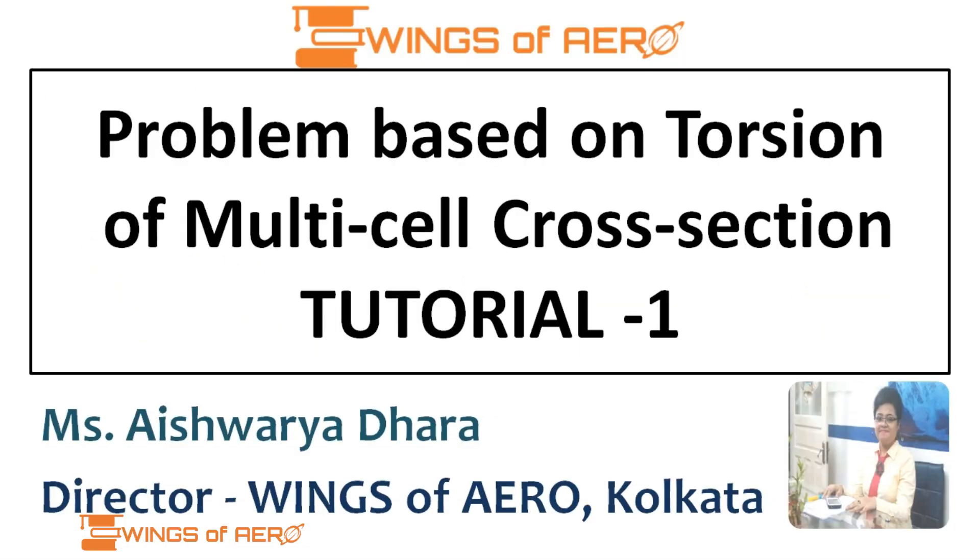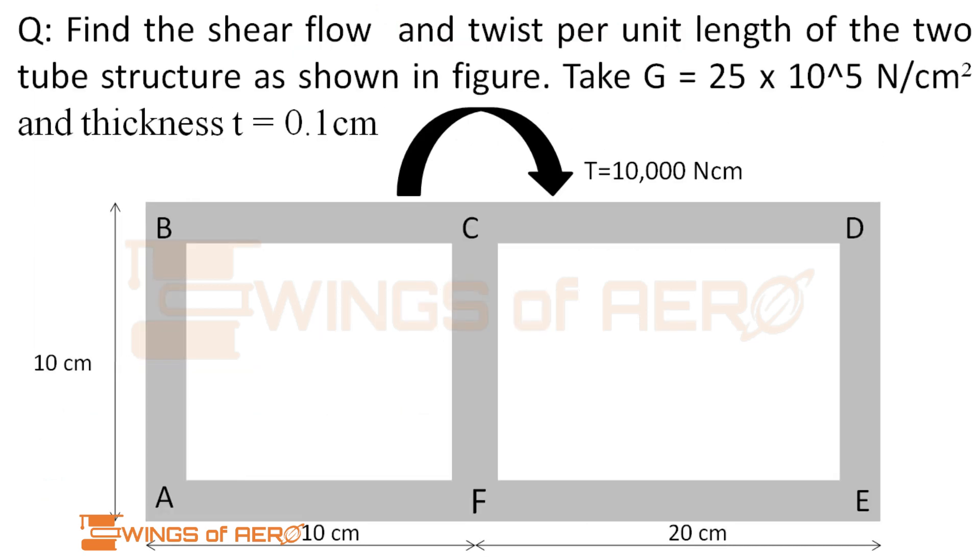Hi guys, today we're gonna see a problem based on torsion of multi-cell cross-section, Tutorial 1. The question asks: find the shear flow and twist per unit length of the two tube structure as shown in the figure. Take G equals 25 into 10 power 5 Newton per centimeter square and thickness t equals 0.1 centimeter.